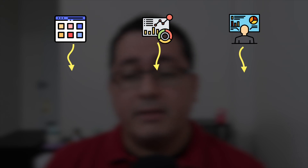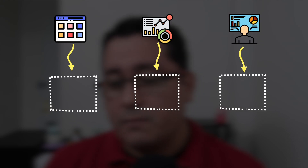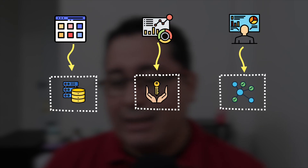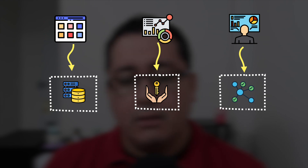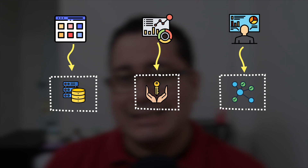Now let's talk about the database per service pattern. This pattern consists of defining dedicated data stores per service. The end goal is to make this data store only available to the service directly — no other direct access is allowed.